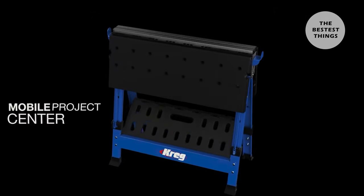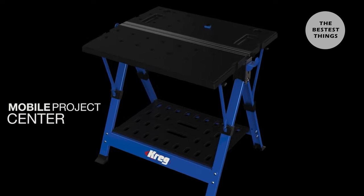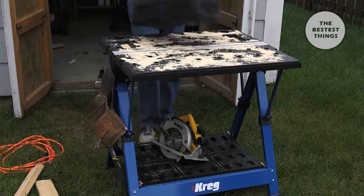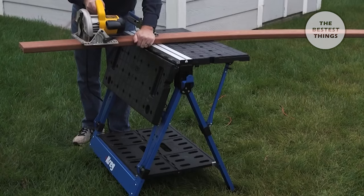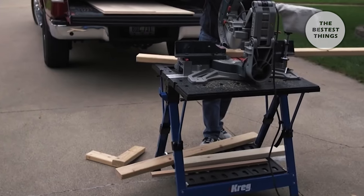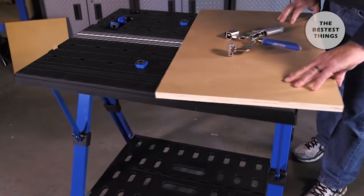The Craig Mobile Project Center combines the portability you want with the versatility you need. It's a workbench, sawhorse, clamping station, assembly table, and more all in one. So you can work on projects whenever, wherever, and however you need to.